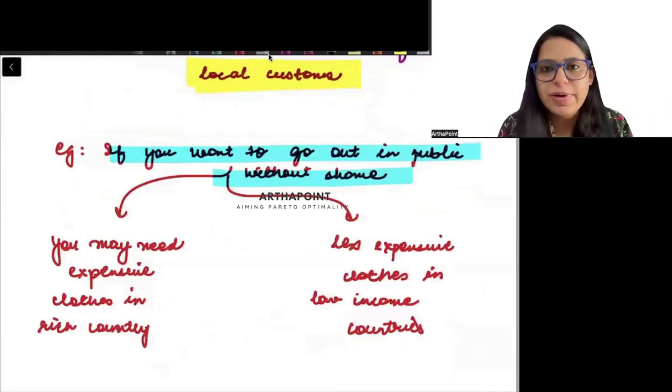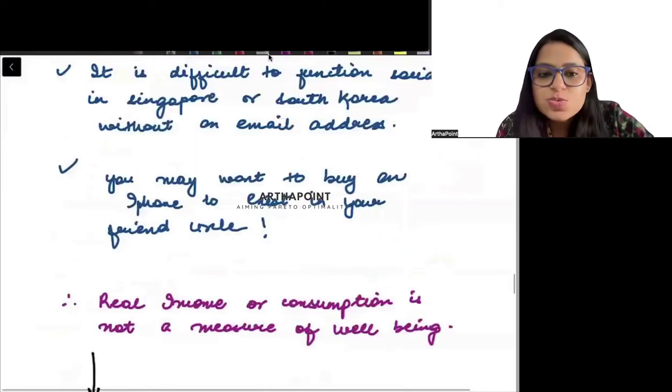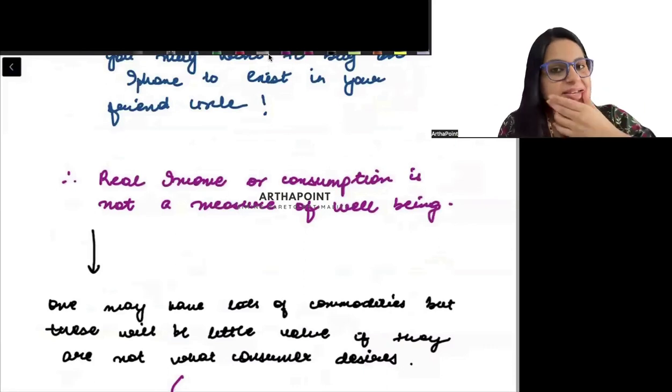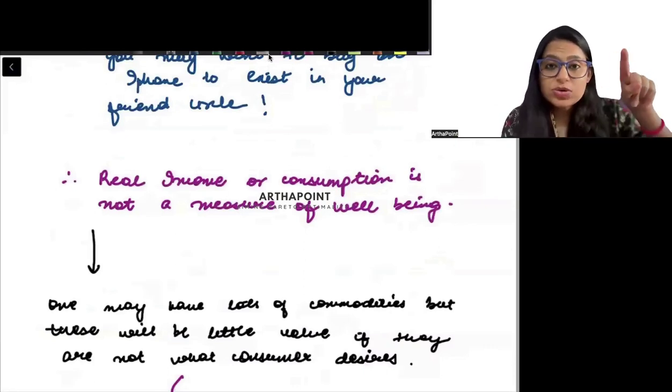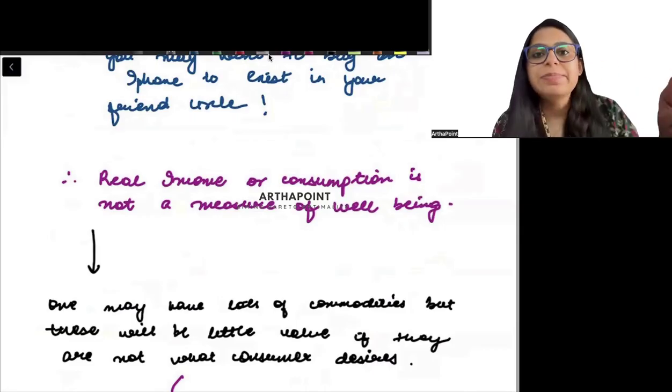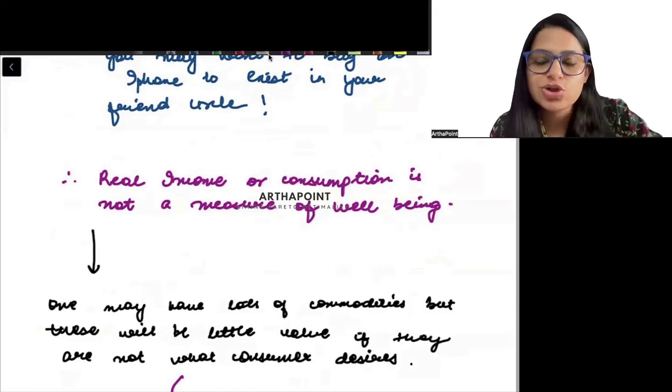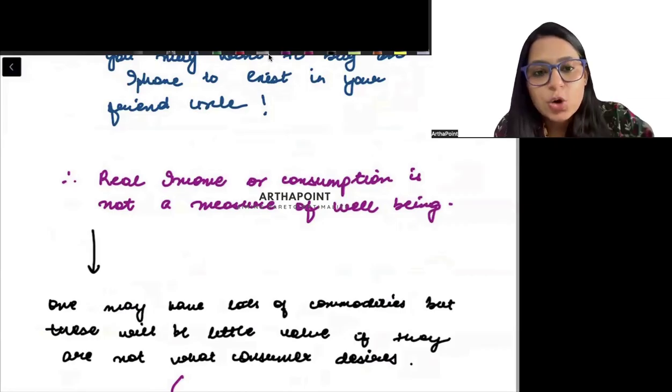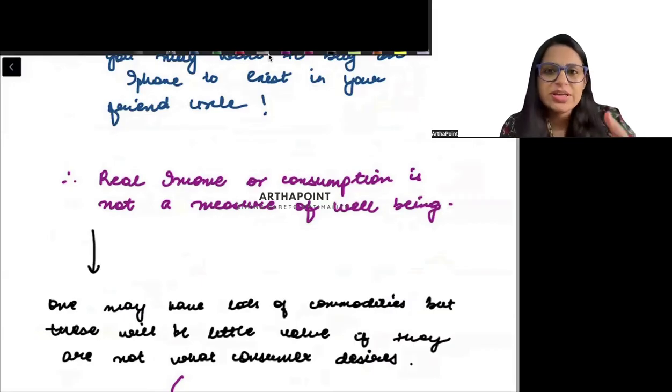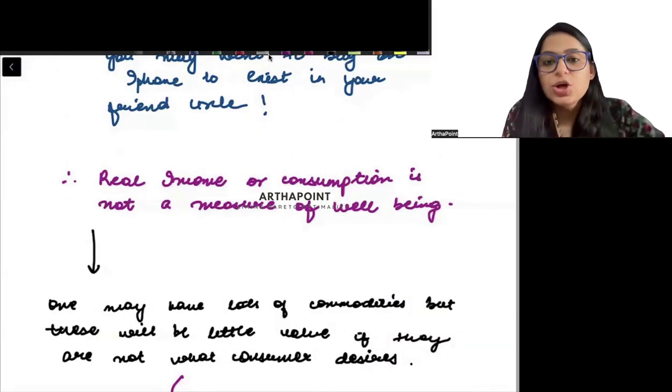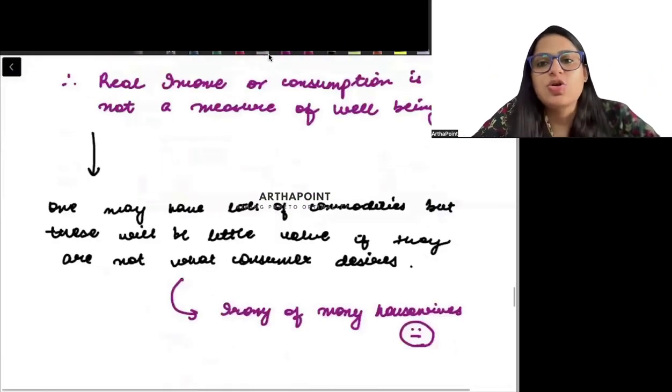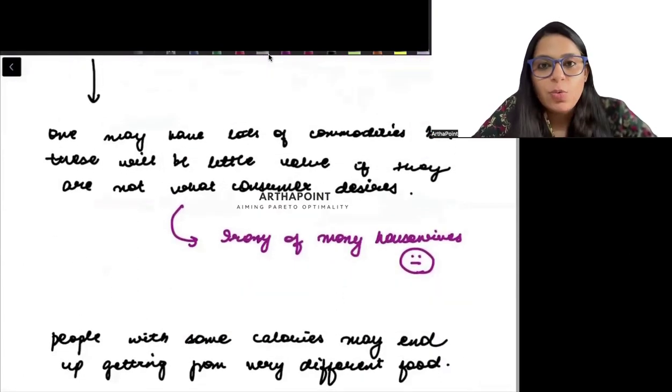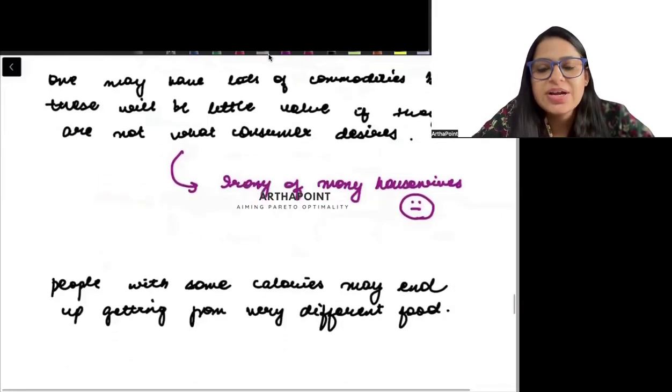So this is what Amartya Sen talks about. Amartya Sen says that your income is not a measure of your well-being. Because for a person who is living in rich society, that same income is not able to ensure that he is happy. The same income is not able to ensure that he is having a good well-being. But if I live in an average society, the same income will ensure that I have a good well-being. So income in itself cannot be a measure of well-being. It depends on what place I live in, what culture I live in. Many things will go ahead and decide my well-being.